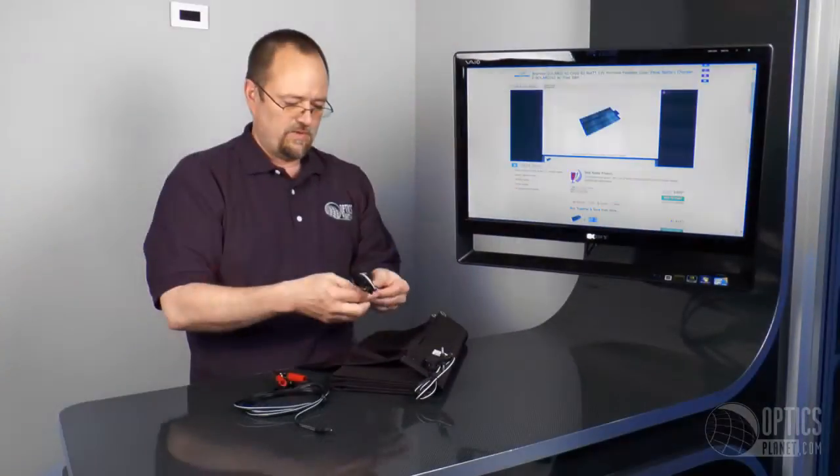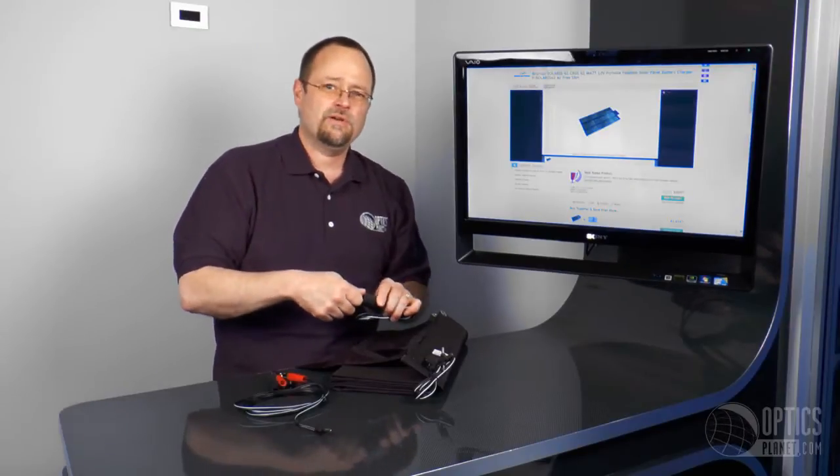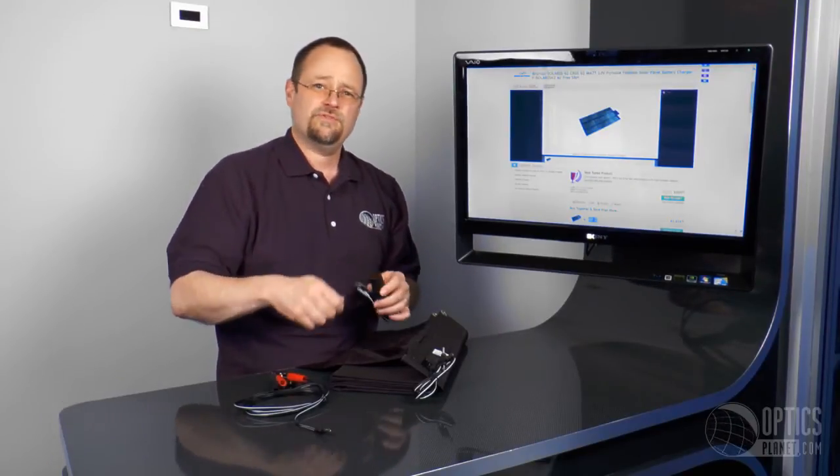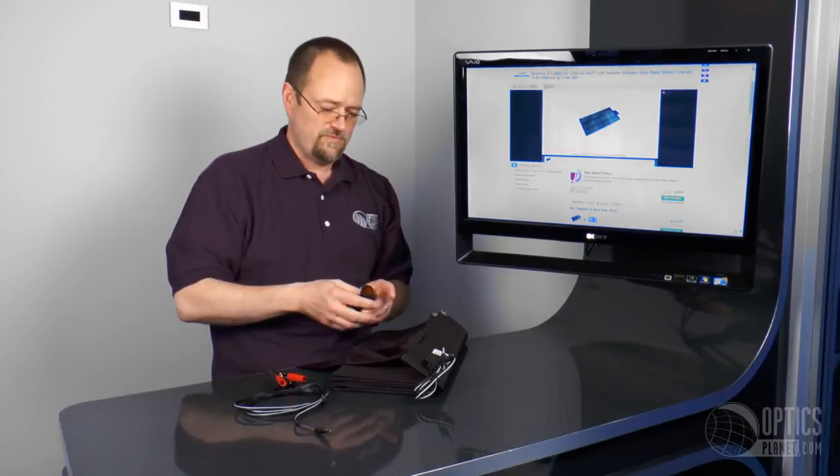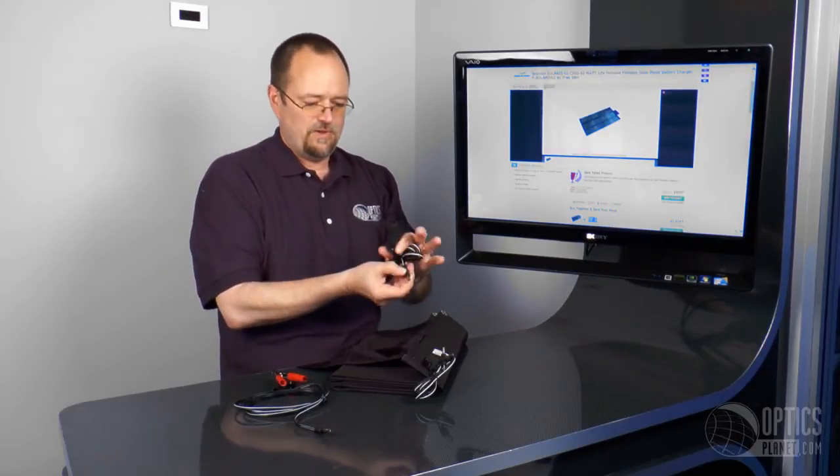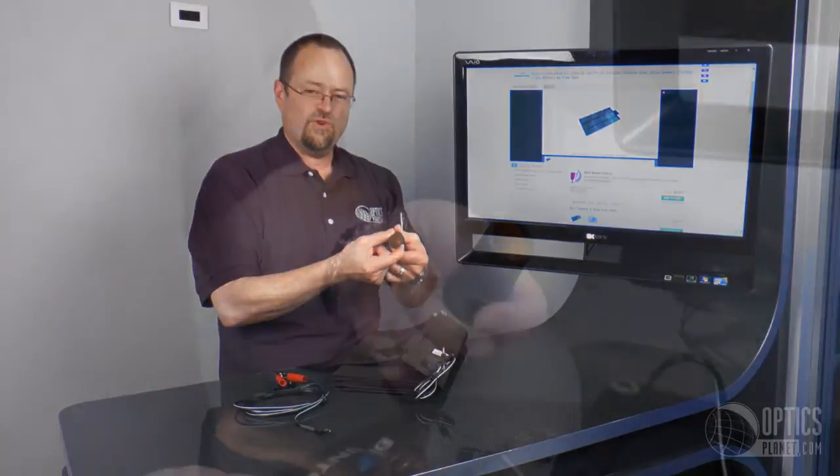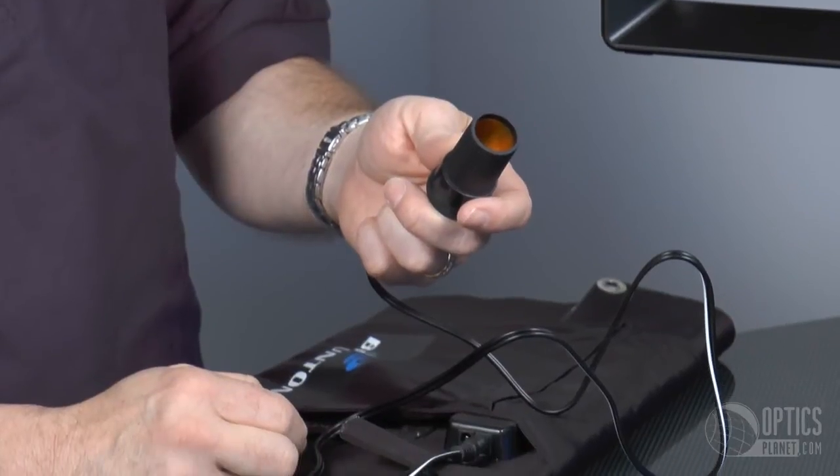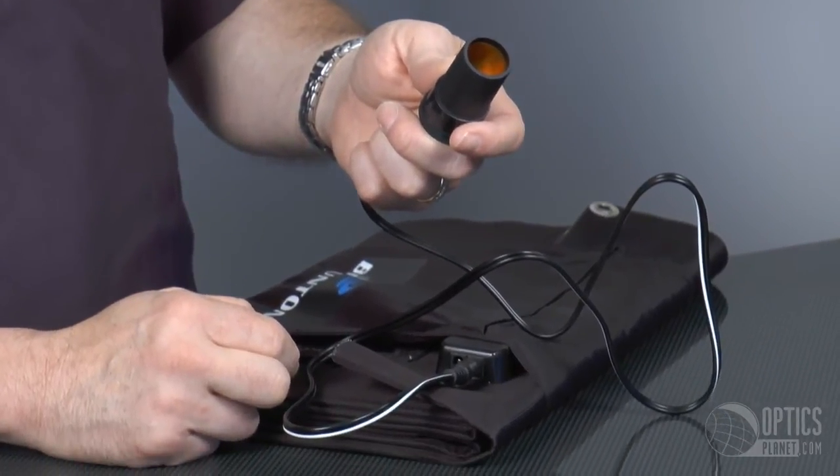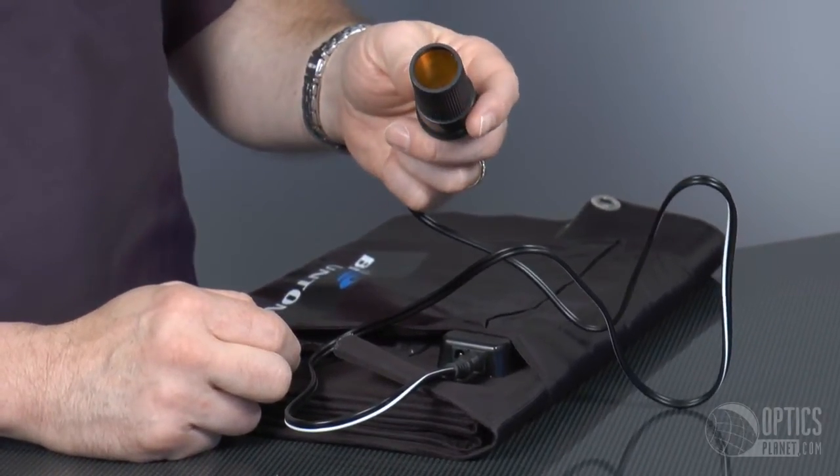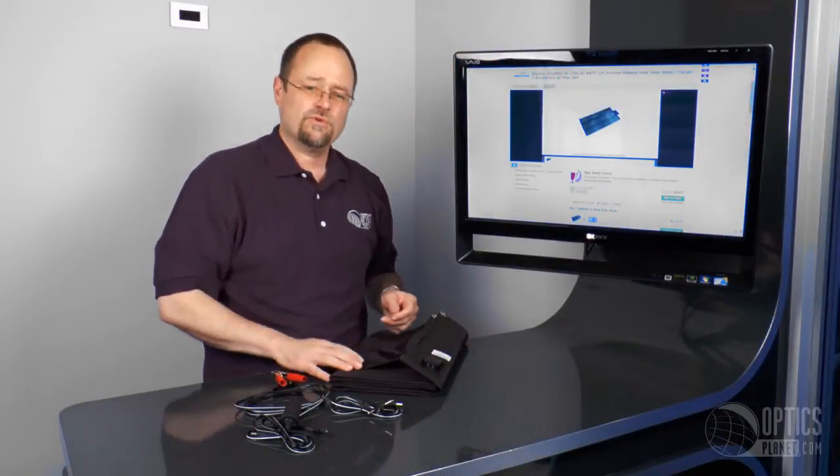Also, if you have something that uses a cigarette lighter plug, probably your cell phone has that type of connector that you use to charge the phone while you're in the car. Same thing here. This has a female 12 volt cigarette lighter accessory plug. It plugs into the unused portion here and you're able to charge anything that you've got that 12 volt connector for.